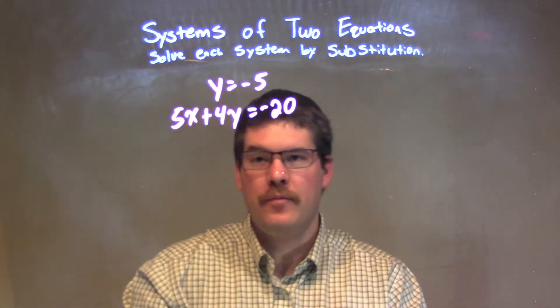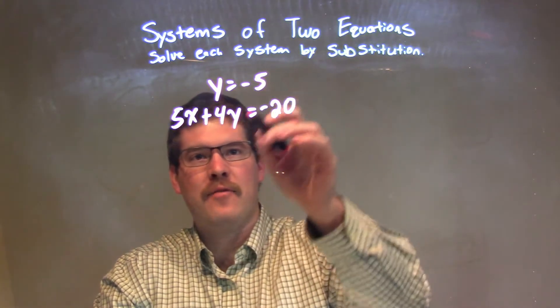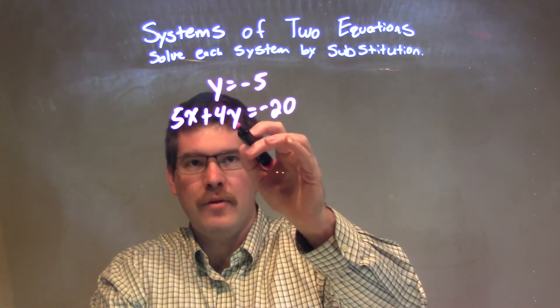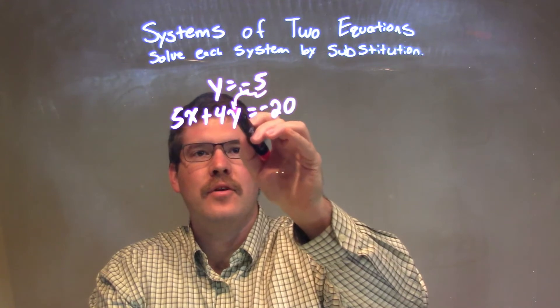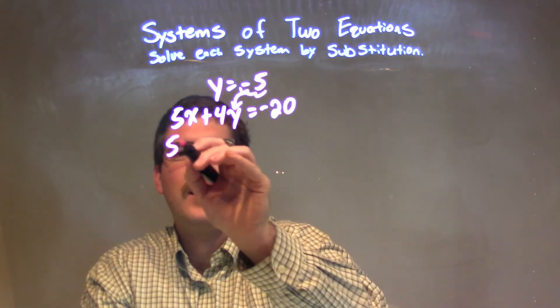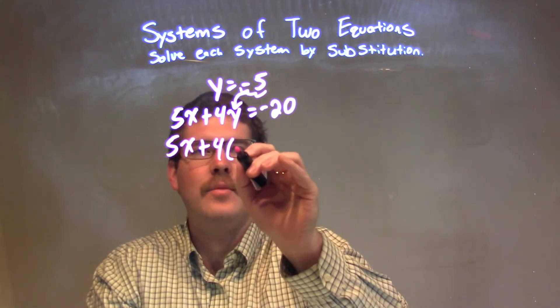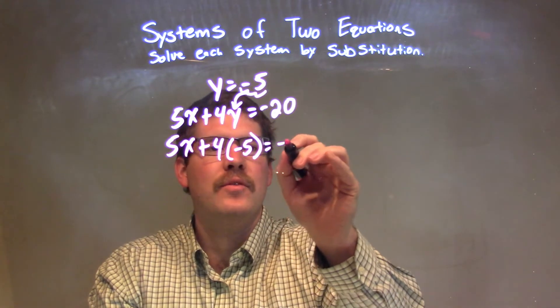y is equal to negative 5. So, it makes it pretty easy to plug that negative 5 in for the second y right here. Or the second equation's y. So, I'm going to plug this negative 5 in for that y. So, we have 5x plus 4 times negative 5 equals negative 20.